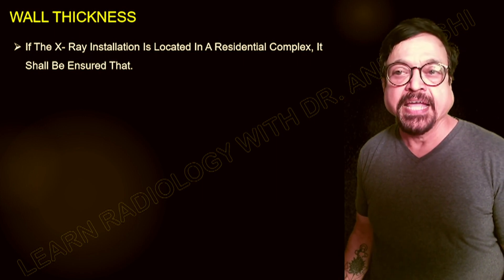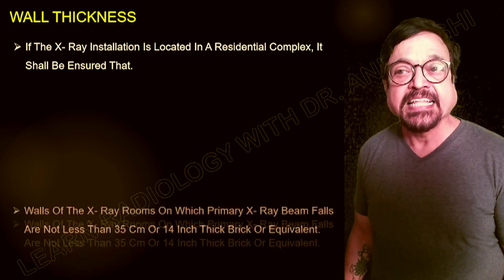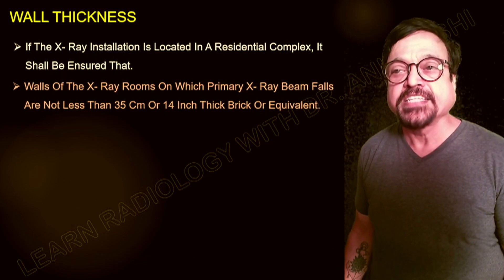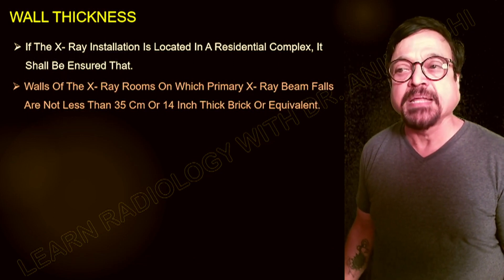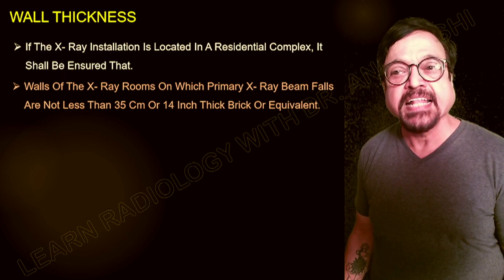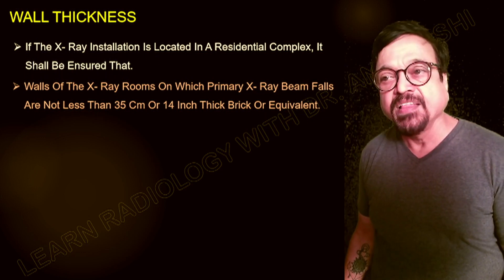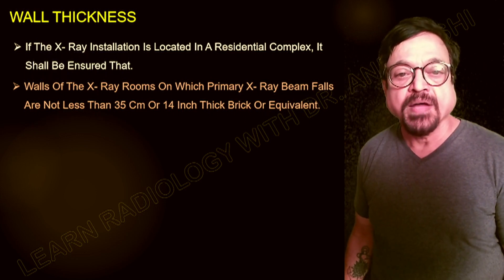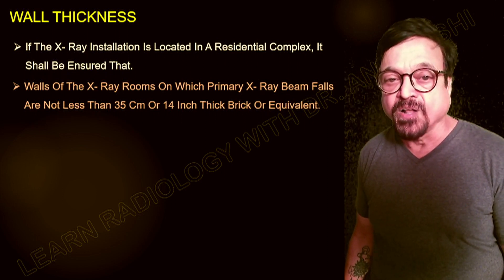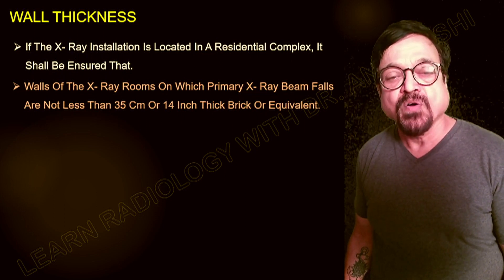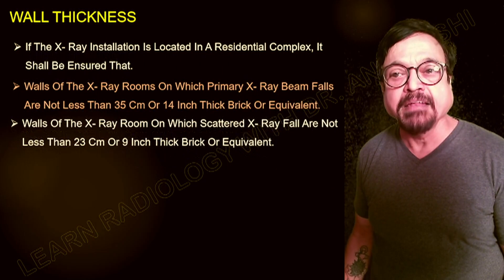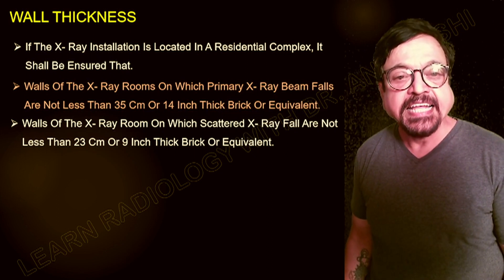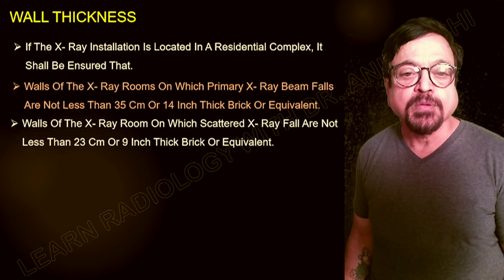If the x-ray unit is located in a residential complex — what we call a non-moving population, such as a residential area or an office — the wall thickness has to be meticulously followed. The walls of the x-ray unit on which the primary x-ray beam falls shall be not less than 35 centimeters or 14 inches in thickness. We divide the room into two parts: where the primary beam falls requires 14 inches, and the remaining walls can be up to 23 centimeters or 9 inches thick.